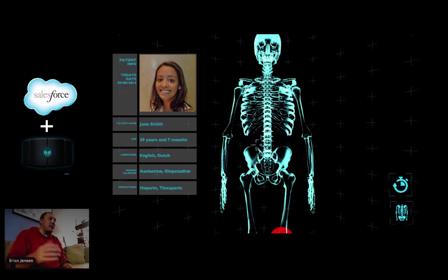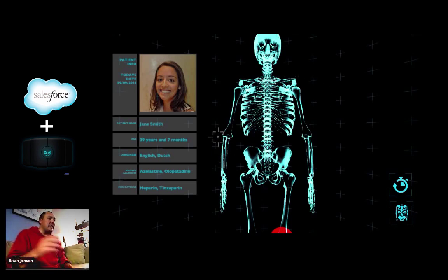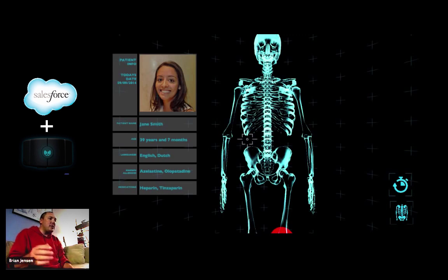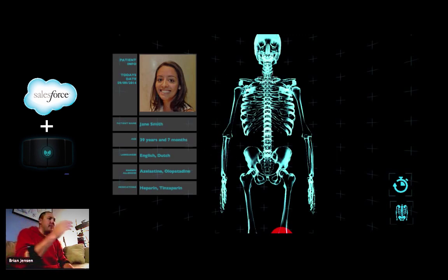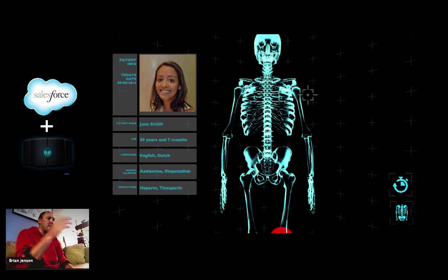What you're looking at here is basically the screen that would be shown in the room. I'm able to see all different parts of the screen, and moving my arm around with the Mio band on my arm, you can see the cursor moving around the screen. To the left, I have all the patient info.